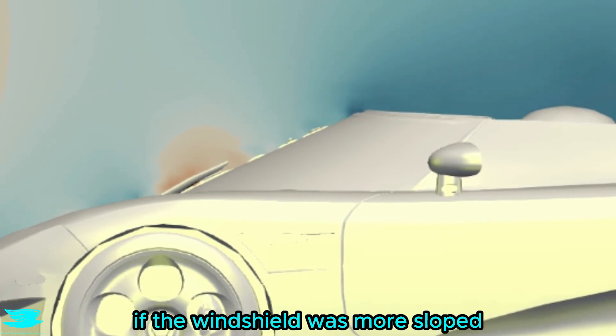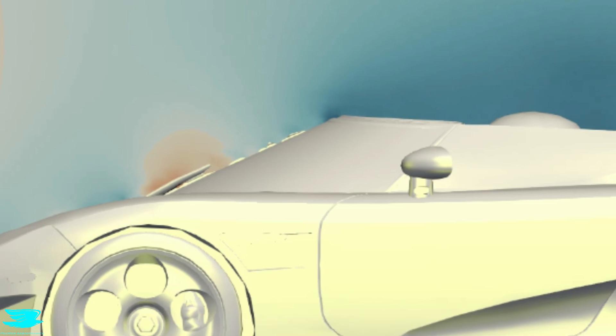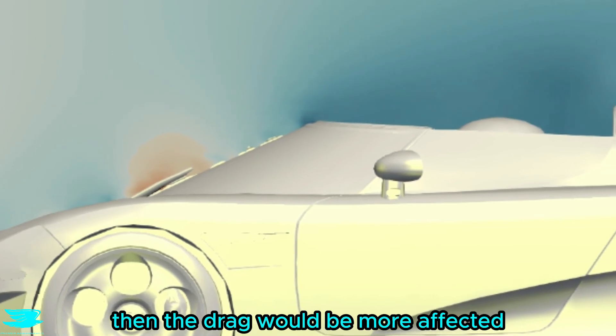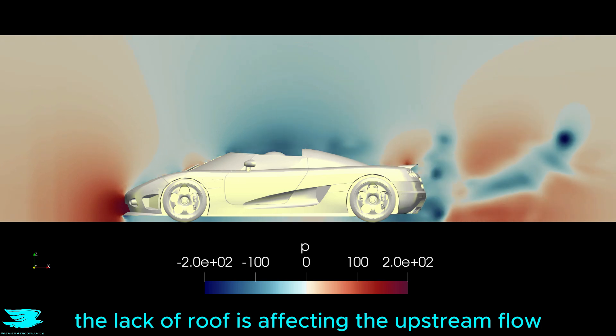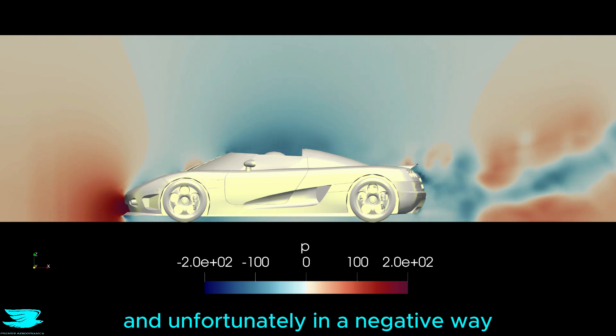If the windshield was more sloped then the lift would be further affected, and if the windshield was more upright then the drag would be more affected. But either way, the lack of roof is affecting the upstream flow significantly and unfortunately in a negative way.